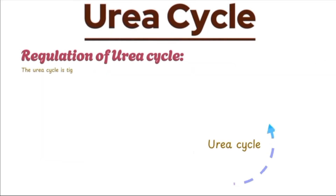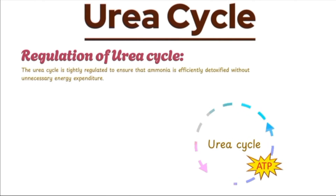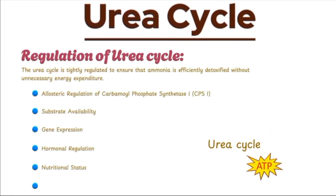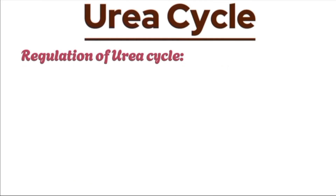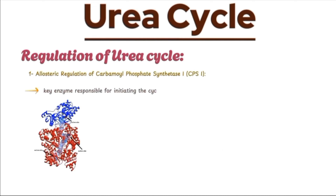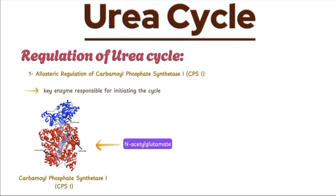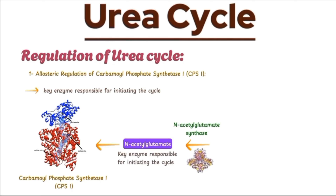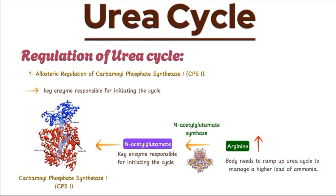The urea cycle is tightly regulated to ensure that ammonia is efficiently detoxified without unnecessary energy expenditure. This regulation occurs at multiple levels, each playing a crucial role in maintaining balance in the body's nitrogen metabolism. At the heart of the urea cycle's regulation is carbamoyl phosphate synthetase 1 (CPS1), the key enzyme responsible for initiating the cycle. CPS1 is allosterically activated by N-acetylglutamate (NAG), a molecule that ensures the enzyme is only active when necessary. NAG is produced by N-acetylglutamate synthase in response to increased levels of arginine, signaling that the body needs to ramp up the urea cycle to manage a higher load of ammonia.